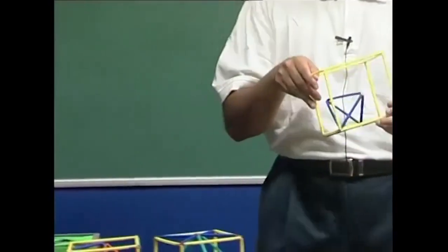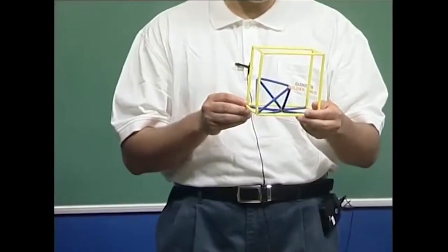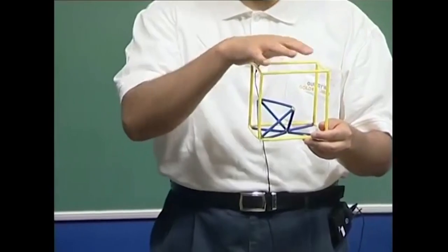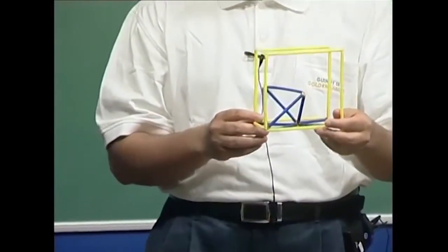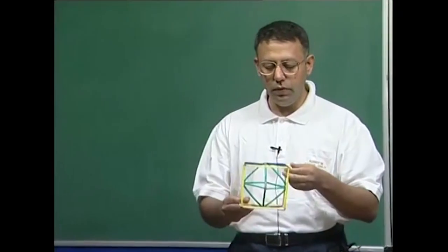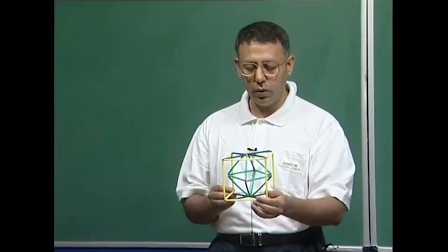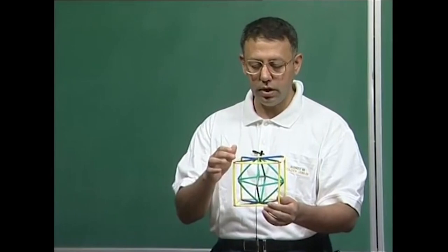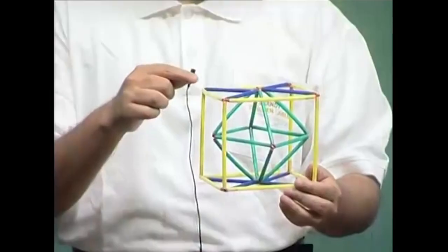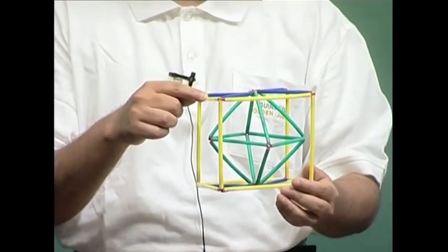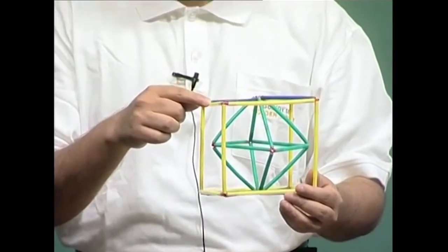We saw that this is the position of the tetrahedral void within the unit cell, starting from one corner. Within a unit cell there are eight such tetrahedra, and the octahedron is located at the body center and also at the edge centers. The body center is related to the edge center by the face-centering translation, which is half, half, 0.